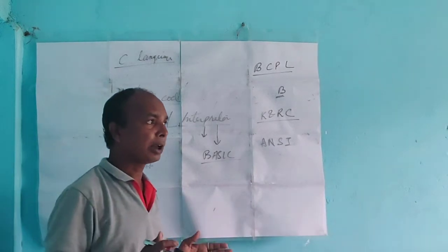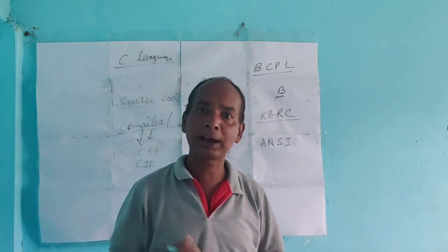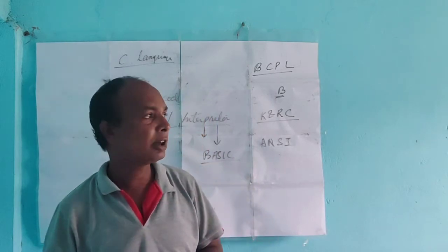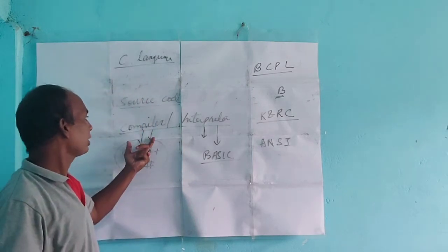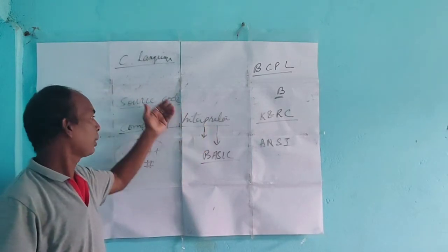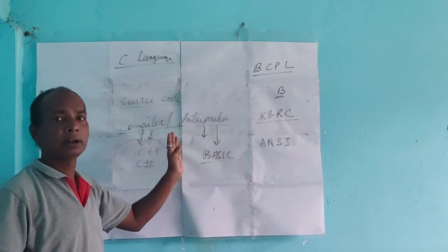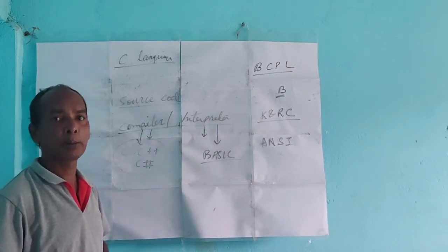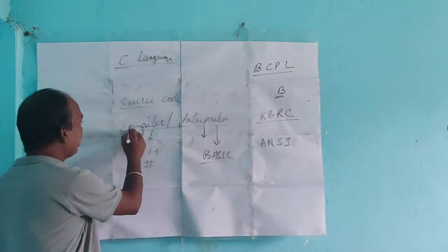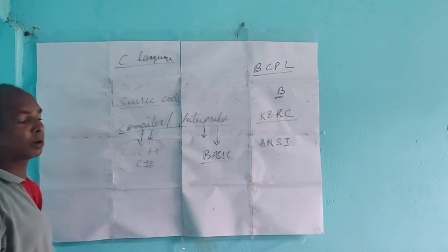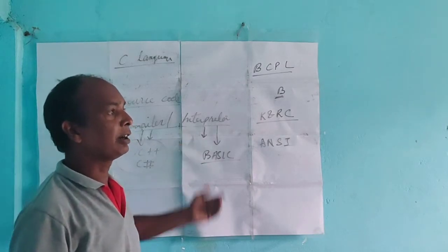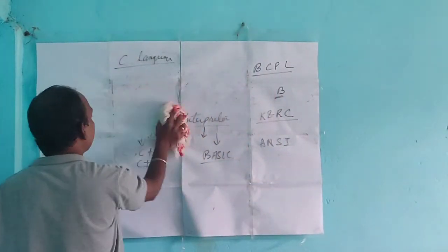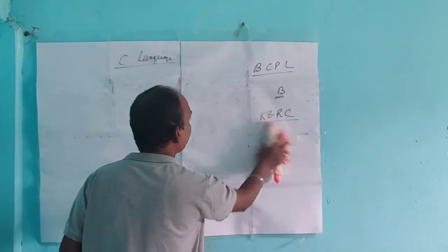The compiler processes the whole program at a time, while the interpreter processes line by line. Because of this, the compiler is faster than the interpreter. Also, it is difficult to find errors in a compiler, but easy to find errors with an interpreter. This is the main difference between compiler and interpreter.